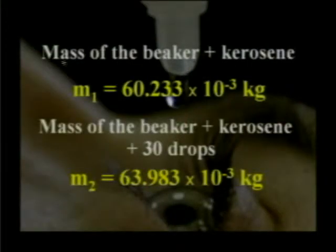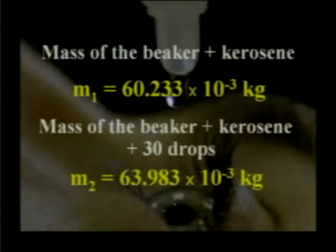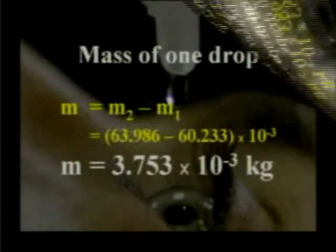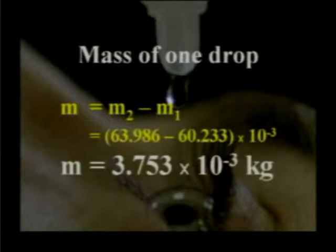We have calculated the value of mass of one drop. These are the readings: mass of beaker plus kerosene M1 = 60.233 × 10⁻³ kg; mass of beaker plus kerosene plus 30 drops M2 = 63.983 × 10⁻³ kg. Mass of one drop M = M2 − M1. Substituting the values of M1 and M2, mass of one drop = 3.753 × 10⁻³ kg.